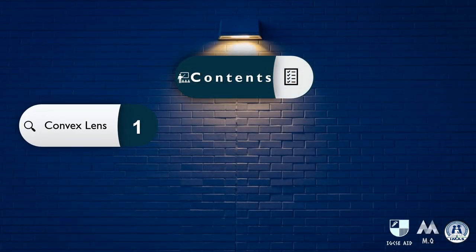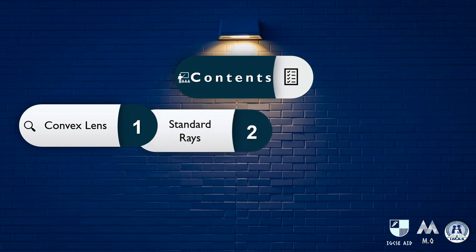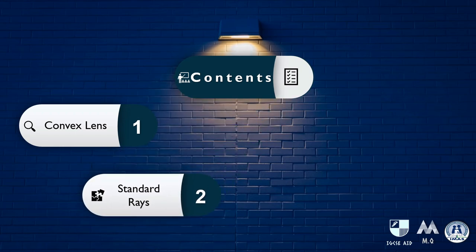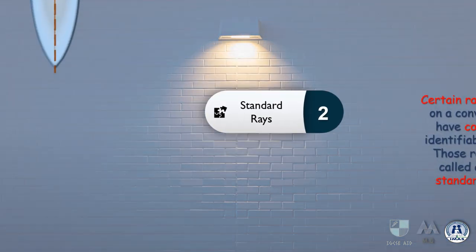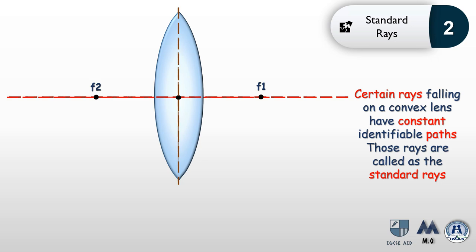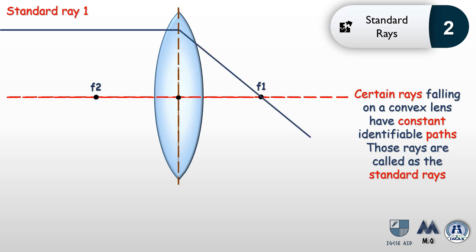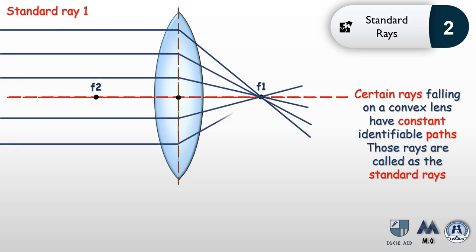Now let's look at the three standard rays and how they are used in a convex lens to form images. Although millions of rays can fall on a lens, these three standard rays have constant, identifiable paths useful for image construction. The first standard ray: whenever a ray parallel to the principal axis falls on the lens, it refracts towards the focal point. This applies to any parallel light ray as shown.